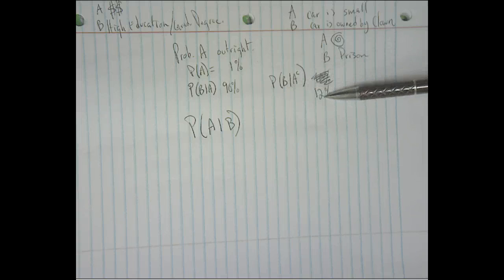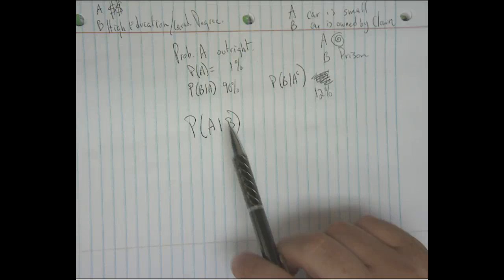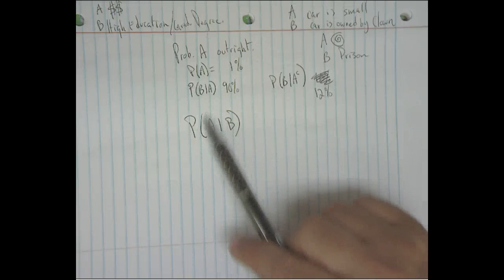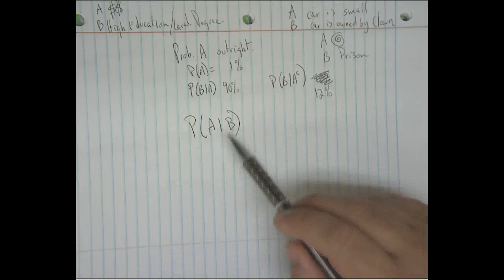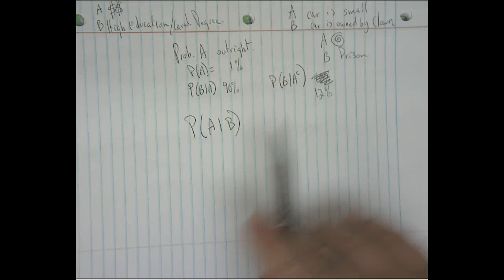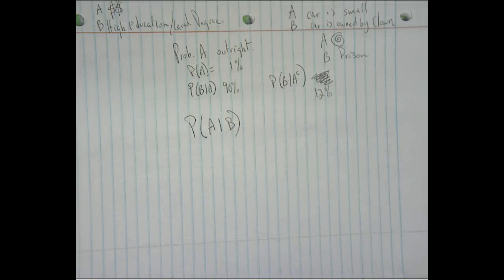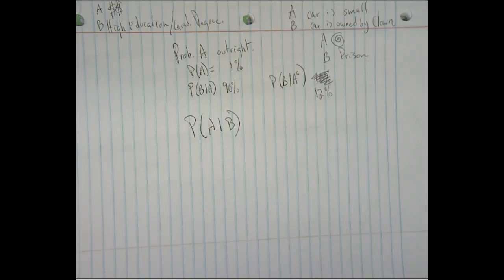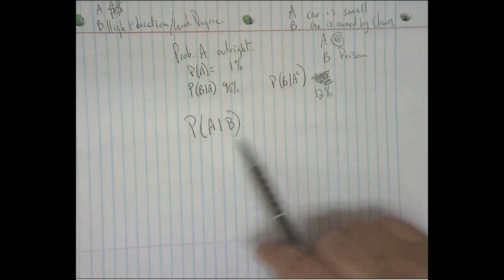The queen knows that the probability of a person making $250,000 is only 1%, but if they do make a quarter million dollars, the probability they have a graduate degree is 90%. And if they don't make a quarter million, the probability they have a graduate degree is only 12%. So she's thinking: if I find somebody with a graduate degree, there should be a good chance they make a quarter million dollars or more. The final question — the punchline — is: what is the probability that if you find somebody with a graduate degree, they actually do make over a hundred thousand dollars a year?